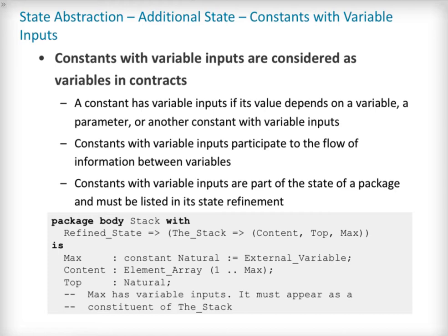Other possible constituents of a state abstraction are constants with variable inputs — constants whose value depends on either a variable or a subprogram parameter. Those are usually handled as variables in flow analysis, as they participate in the flow of information between variables throughout the program. Thus, constants with variable inputs, just like variables, are considered to be part of a package's state. If a state abstraction is specified for a package, then hidden constants with variable inputs declared in this package must be listed in the state abstraction refinement. Note that constants without variable inputs do not participate in the flow of information and therefore cannot appear in a state refinement. In our example here called max, since it has variable inputs, max must be a part of the state abstraction the_stack.